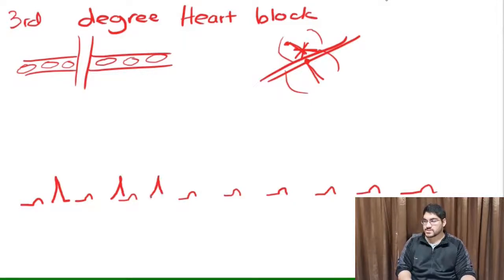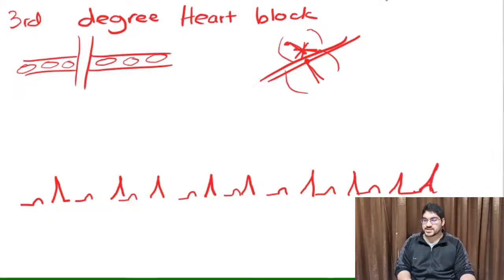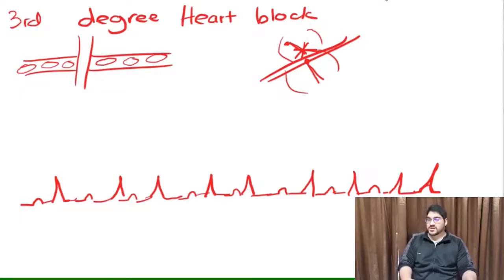But what you'll notice is the AV node impulses have pretty much nothing to do with the impulses from the SA node. So you can actually get something like this, where the SA node and the AV node release an impulse at the same time, and you get one amalgamated beat. And this is what a third degree heart block looks like. At first sight, you may think there's a long PR interval, or there's a short PR interval. But if you actually look and you pay attention, you'll notice that there's actually no real PR interval at all.